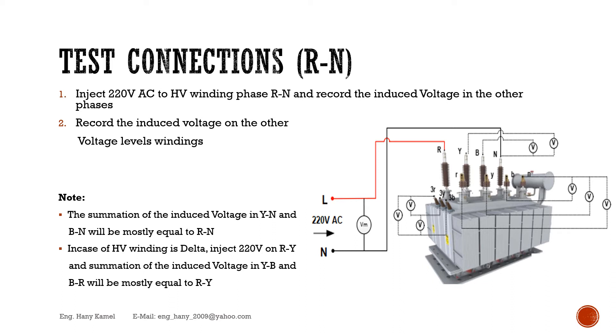Inject 220 volt to HV winding phase R-N and record the induced voltage in the other phases. Record the induced voltage on the other voltage level windings. Note: The summation of the induced voltage in Y-N and B-N will be mostly equal to R-N.